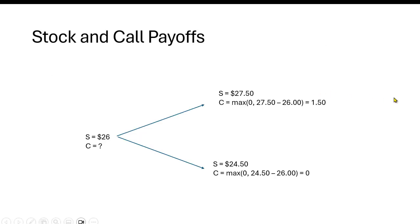So we get this little picture, this little tree here, that says right now the stock price is $26. And it can go to $27.50, or it can go to $24.50. And what's the value of the call in those states?